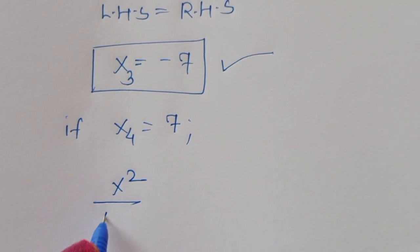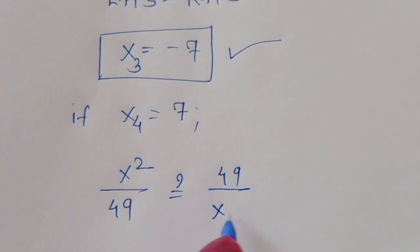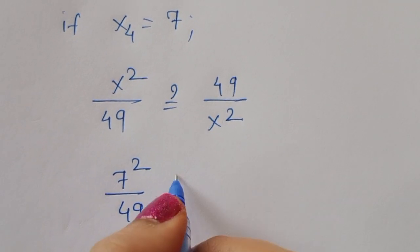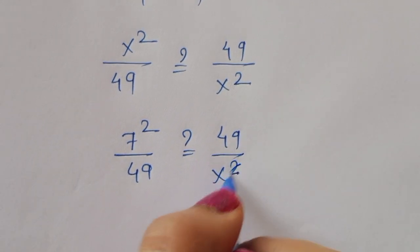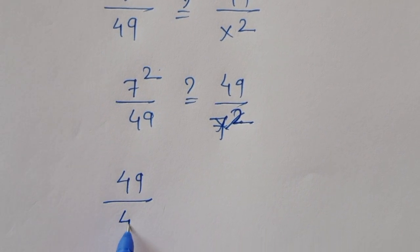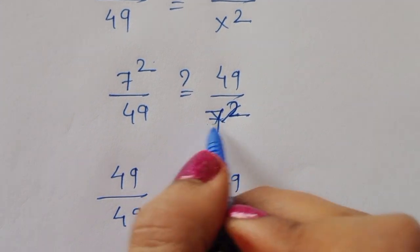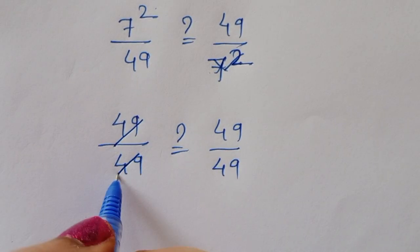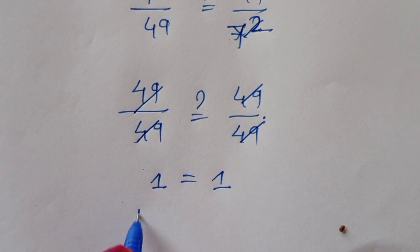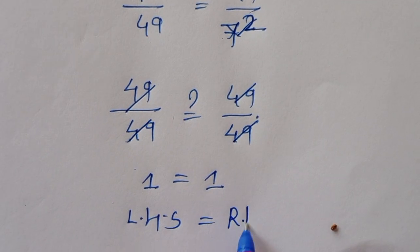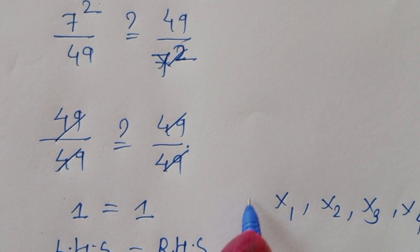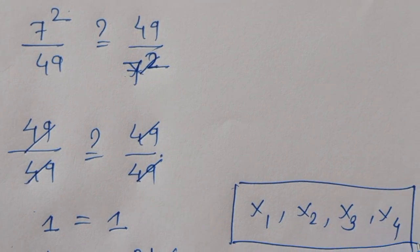For x₄ = 7: substituting into x²/49 = 49/x², we get 7²/49 = 49/7², which gives 49/49 = 49/49, so 1 = 1. LHS = RHS. Therefore all four solutions x₁ = -7i, x₂ = 7i, x₃ = -7, and x₄ = 7 are correct. Thank you.